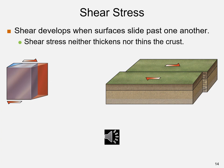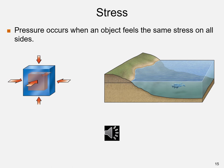Shear stress occurs when surfaces slide past one another, neither thickening nor thinning the crust. A cube and rhombic prism show the backside shifted to the right, and the diagram shows horizontal shear with one block of crust moving left and an adjacent block moving right. Pressure occurs when an object feels the same stress on all sides, compressing a cube into a smaller, denser cube. An underwater diver feels the same stress on all sides at any depth.